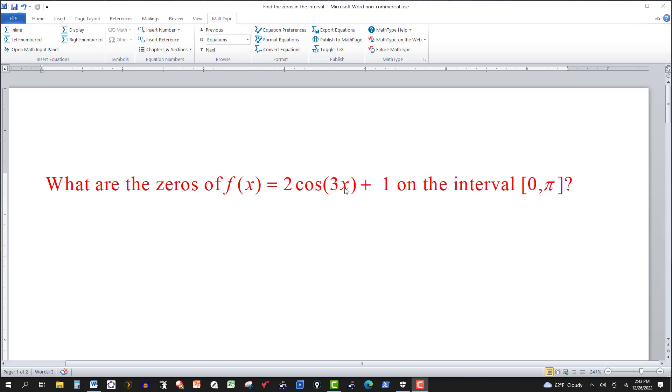Put a π where the x is and compute 2 cosine of 3π plus 1. Cosine of 3π is negative 1, so negative 1 times 2 is negative 2, plus 1 is negative 1. So that doesn't give me a 0 either. So all we're doing here is we want to find out what values of x.